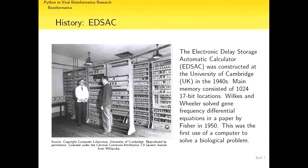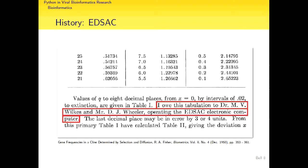What I found quite interesting was this EDSAC machine from the 1940s — 1,024 17-bit locations of memory — believed to be the first computer used to solve a biological problem. In a paper from Fisher in 1950, there's a table of gene frequencies, with Fisher crediting two researchers 'operating the EDSAC electronic computer.' That is, we think, the first time computer technology was used in a biological problem.